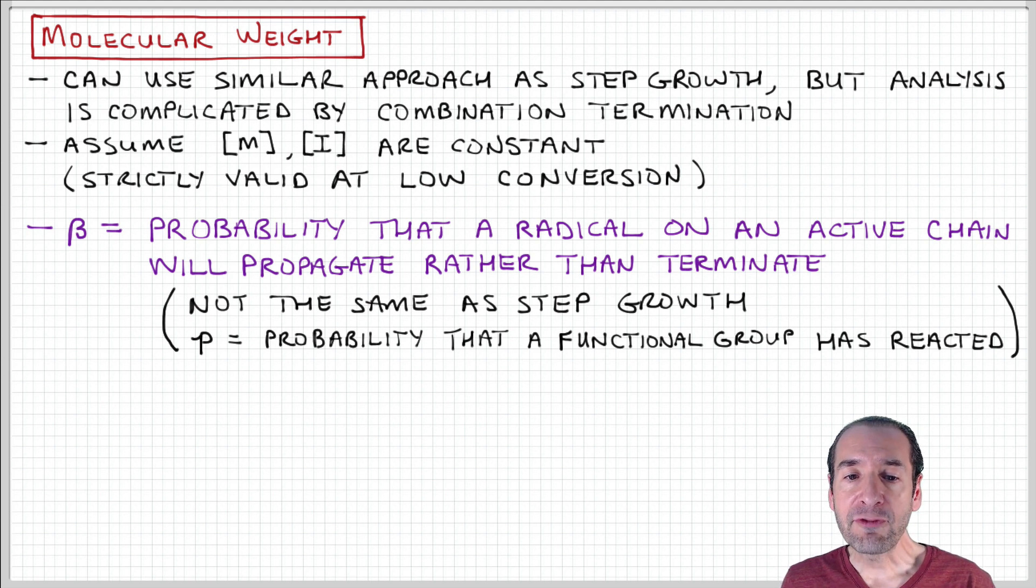distributions. I'm going to define a term called beta (β), which is the probability that a radical on an active chain will propagate rather than terminate. In other words, it's the probability that a reactive group on an active chain will continue to produce a growing polymer.